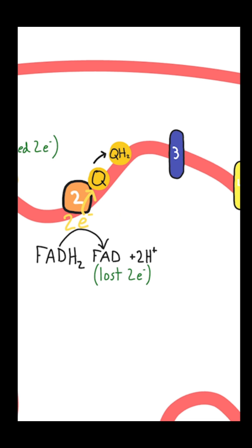At Complex 2 we have a similar thing happening, but this time instead of NADH, it's FADH2 that is the source of those electrons. Like at Complex 1, these electrons move to a molecule of ubiquinone and turn it into ubiquinol.